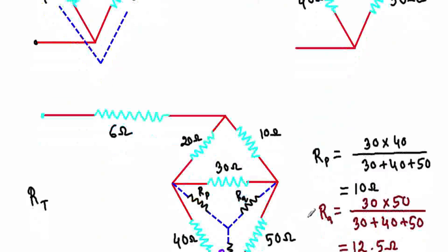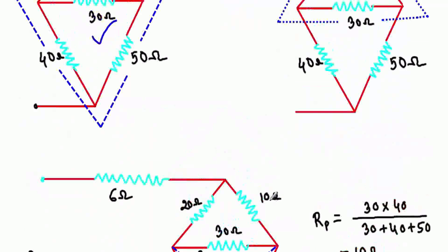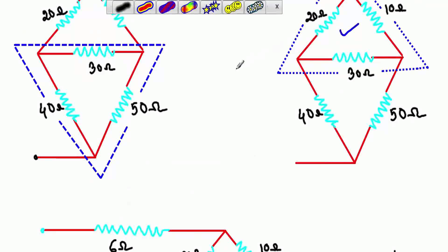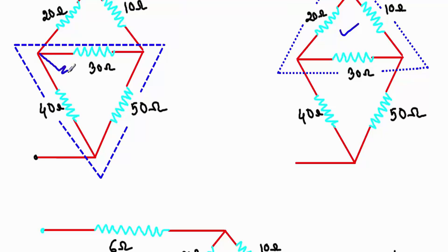Let's say I apply Y transformation to this Delta circuit. If I convert this Delta into a Y, I will get three resistances that will be connected between these terminals.